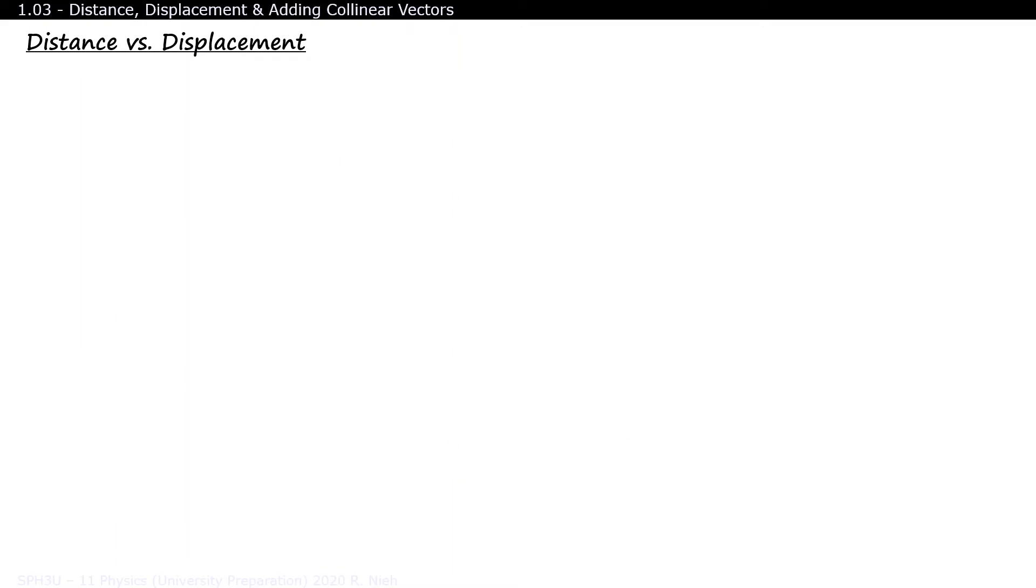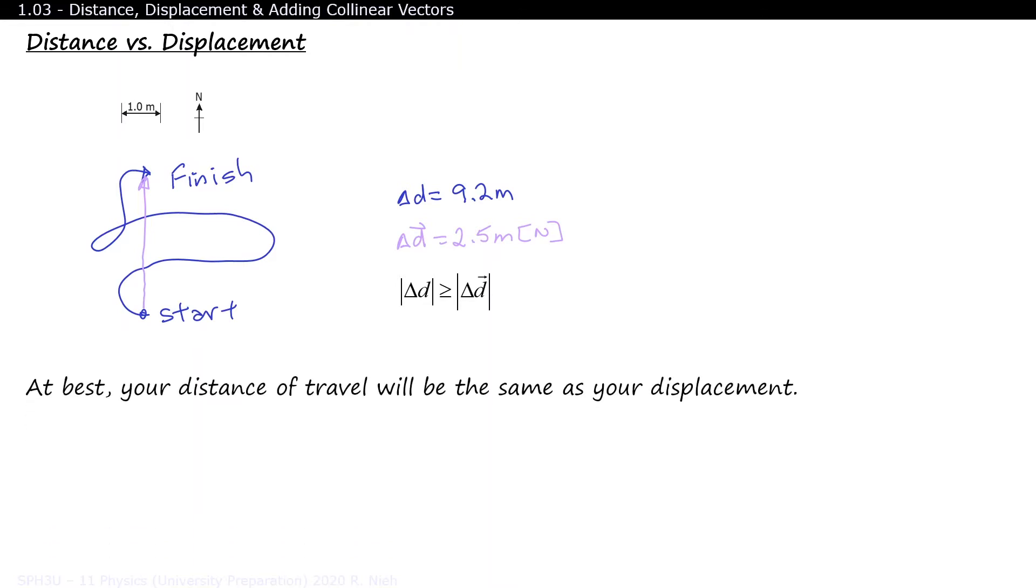Let's briefly compare the difference between distance and displacement using a scaled diagram. As the name implies, all scaled diagrams need a scale and a compass rose. The blue line represents a distance that is traveled. Meanwhile, the purple line represents a displacement. Displacement is always represented by a straight line as it describes the net travel of a person or object. Comparing between the magnitudes of both lengths, distance is usually longer than displacement. At best, distance will only match displacement if you travel in a straight line.